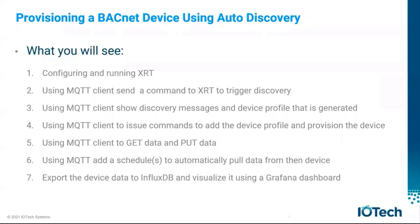What you will see in the demo is how easy it is to provision a BACnet device using the audit discovery features of the protocol and manage through XRT. The demo shows how to configure and run XRT, then use the standard MQTT API to trigger BACnet discovery, then view the discovery metadata and device configurations that are automatically generated. We will then issue commands to explicitly provision any devices that have been discovered and then issue requests to read data from and write data to the BACnet device.